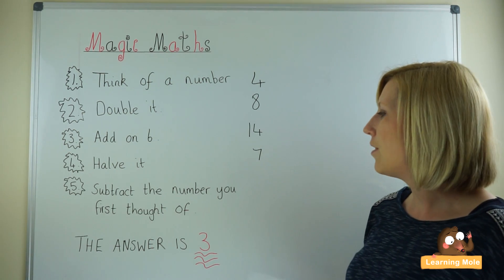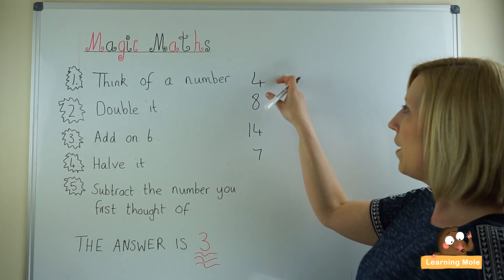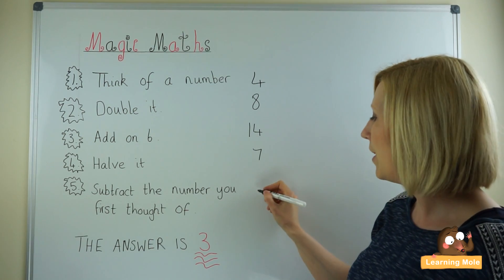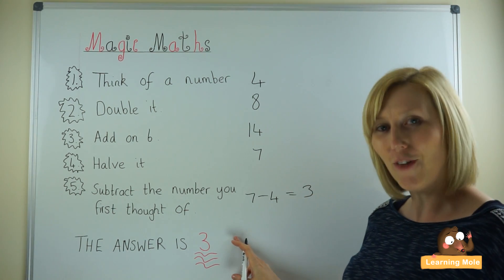And the last step is to subtract the number you first thought of. So we first thought of the number 4. So you're going to do 7 take away 4. And you will come to the answer 3.